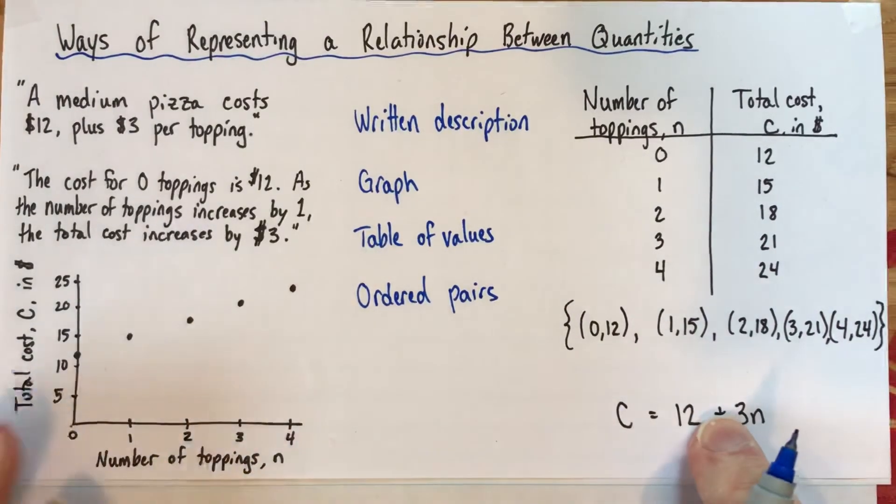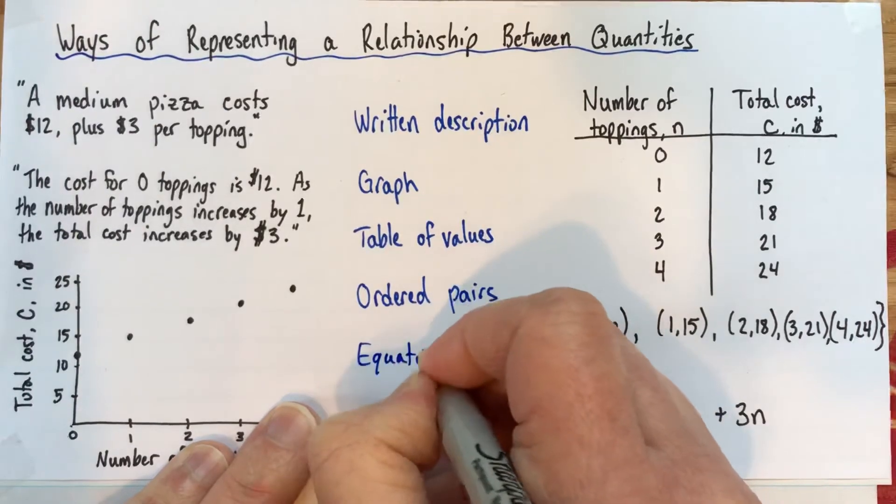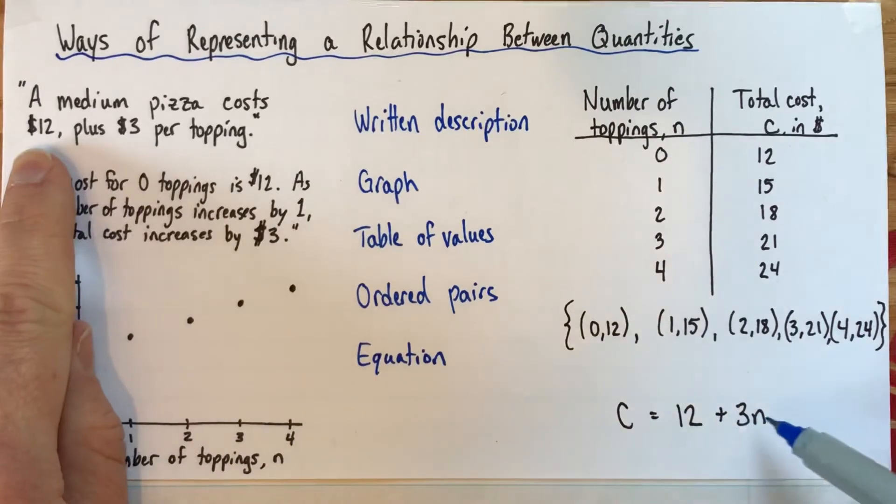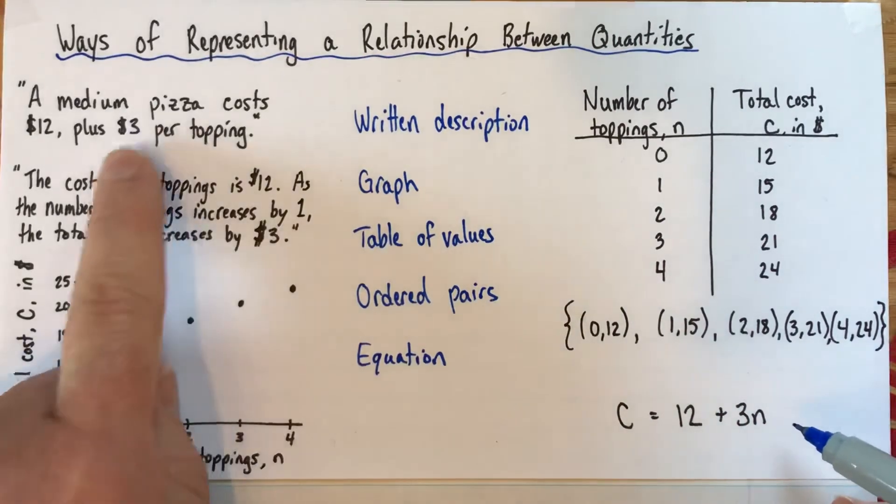And then here's another way of representing a relationship, is with an equation. And in this case, the cost of the pizza, c, is equal to $12. That's how much it is just for plain pizza, plus three times the number of toppings. Because each topping is $3.